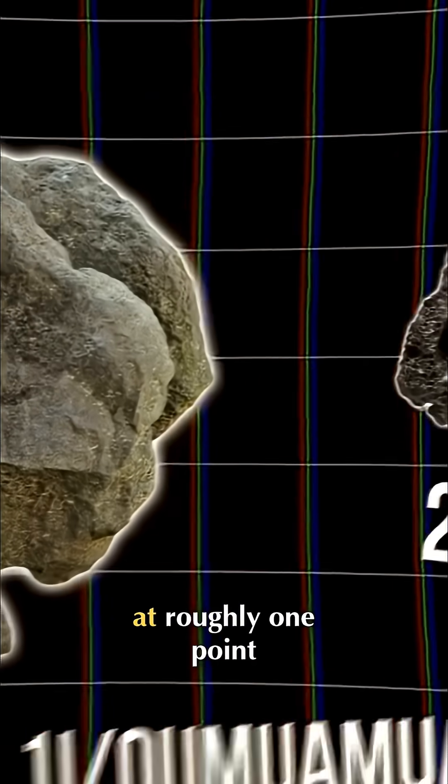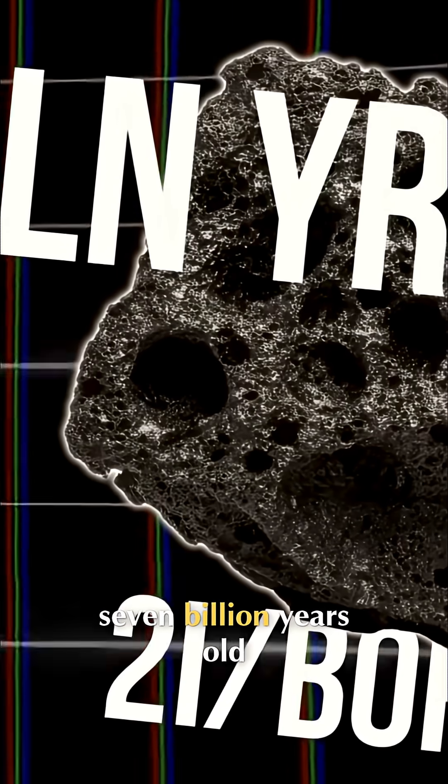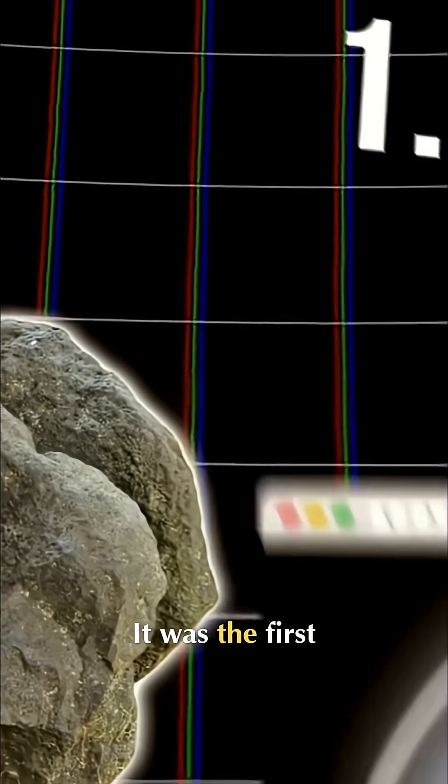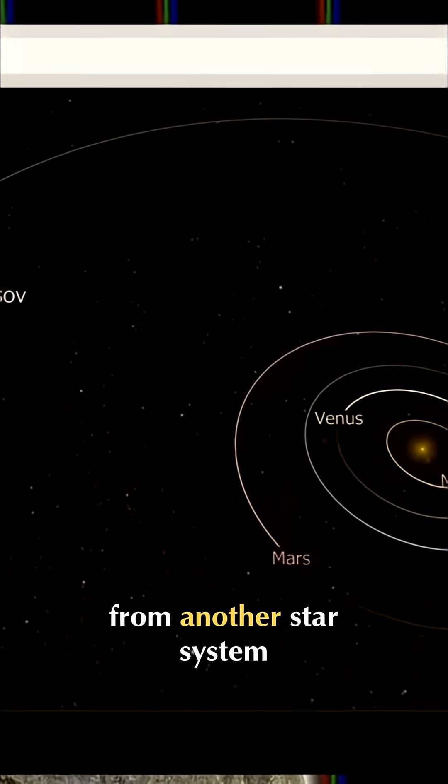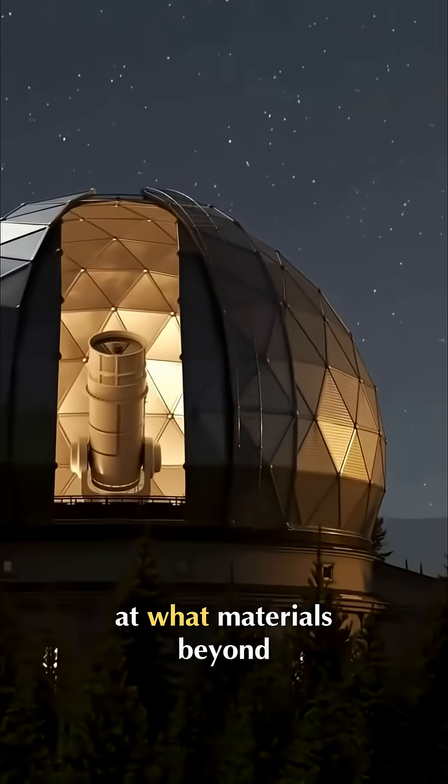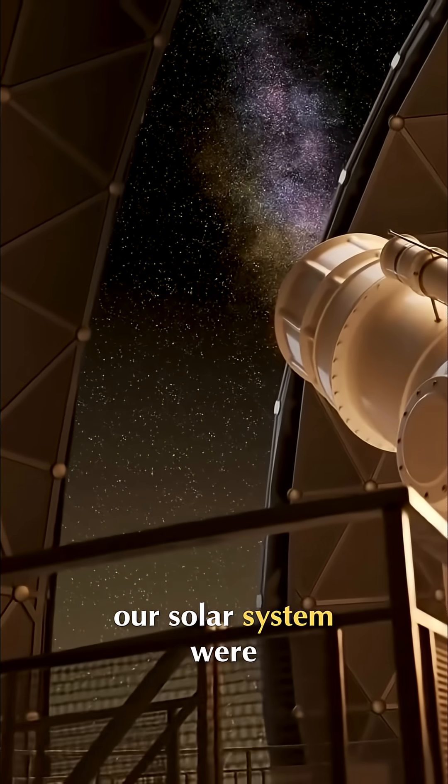As for Two-Eye Borisov, it sits in between at roughly 1.7 billion years old and also came from the thin disk. It was the first confirmed comet to come from another star system, and it gave scientists a super-rare peek at what materials beyond our solar system were made of.